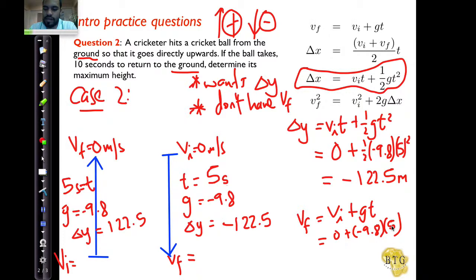Let's type that into the calculator quickly. We get 5 multiplied by negative 9.8, and we get an answer of minus 49 meters per second. Now, of course, it's going to be minus 49 meters per second, because that's just 49 meters per second downward.